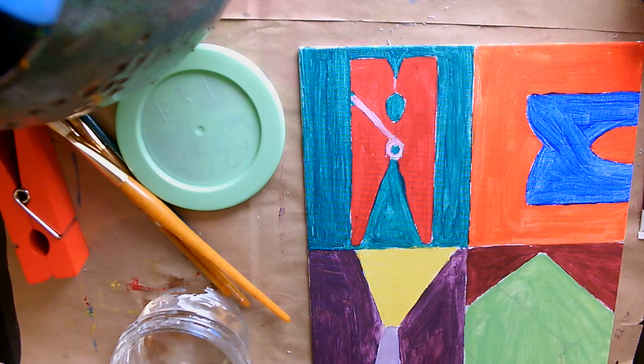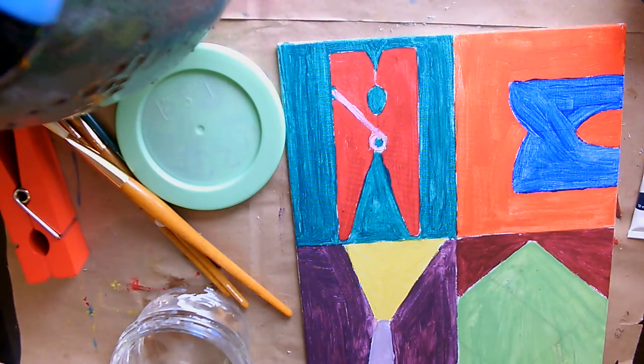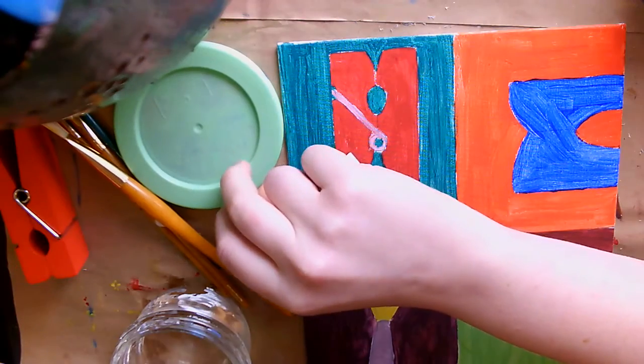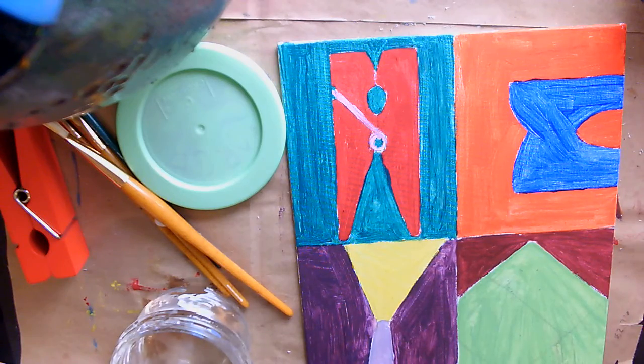Alright everyone, so my painting is nice and dry. I'm ready to start adding some highlights and shadows. To do that, I'm going to need a little bit of white paint and a little bit of black paint.